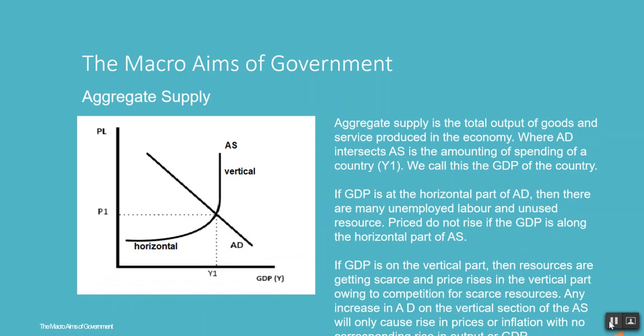Aggregate supply is the total output of goods and services produced in the economy. Where AD intersects AS is the amount of spending of a country — we call this the GDP of the country. If GDP is at the horizontal part of AS, then there are unemployed labour and unused resources, and prices do not rise. If GDP is on the vertical part, then resources are getting scarce and prices rise owing to competition for scarce resources. Any increase in AD on the vertical section of the AS will only cause a rise in prices or inflation, with no corresponding rise in output or GDP.